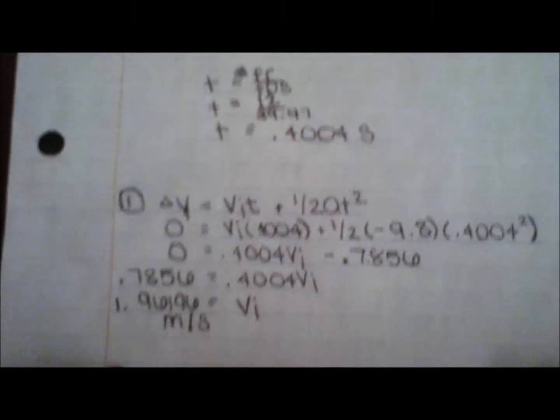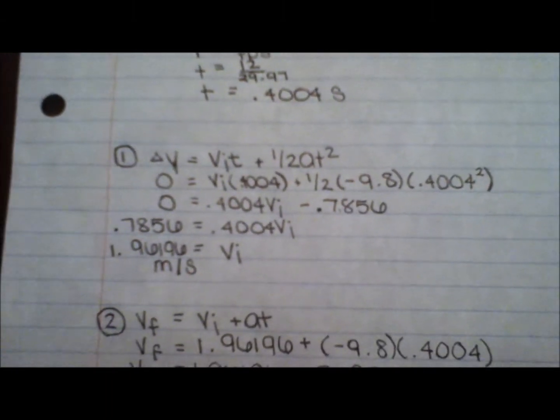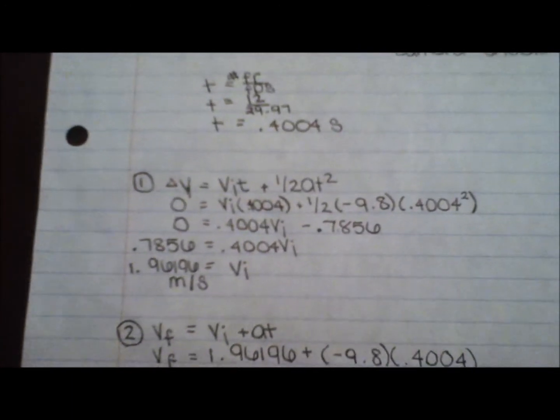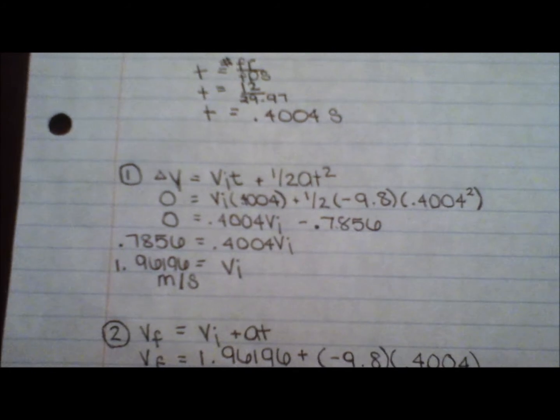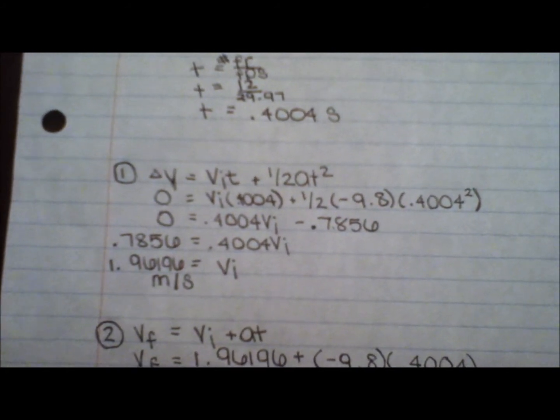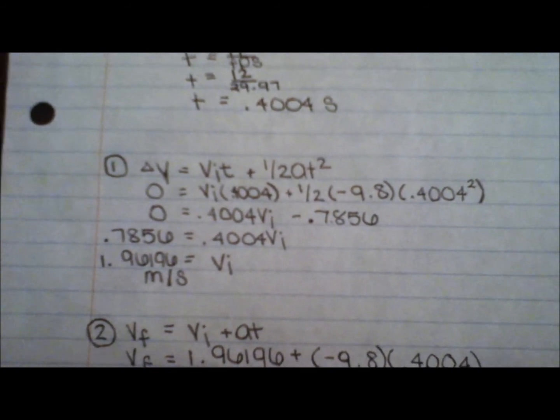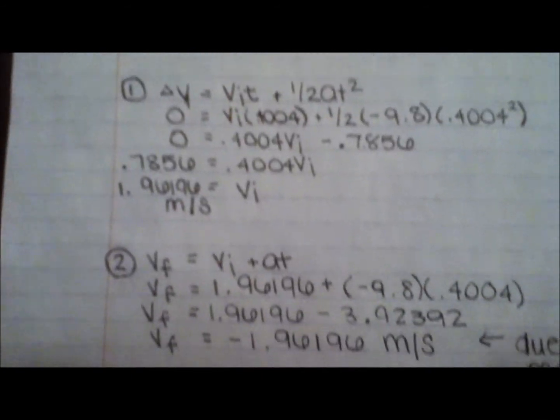So, these variables which we just found are substituted into one of the three constant acceleration motion equations, since we're solving for vertical motion. Here, we are solving to find velocity initial. Once this is done,